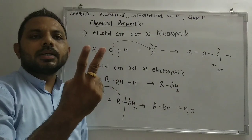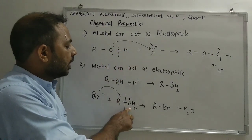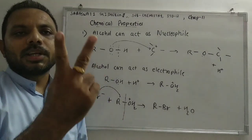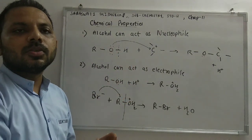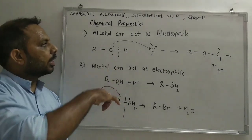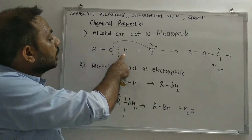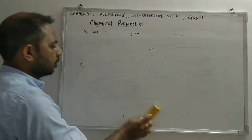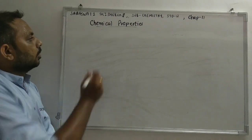So there are two types of chemical properties of alcohol. The first type is based on breakage of the bond between oxygen and hydrogen (O–H bond). The second type is based on breakage of the bond between carbon and oxygen (C–O bond). Today we will discuss properties based on breaking of the O–H bond.